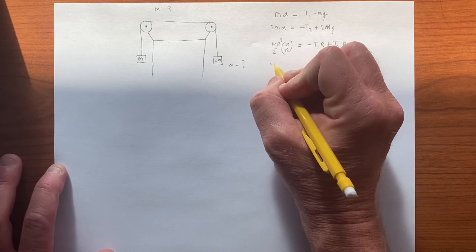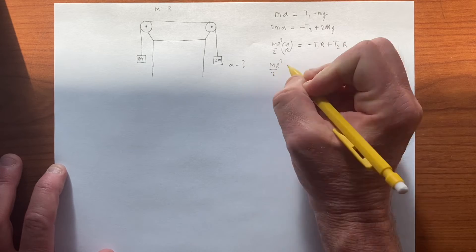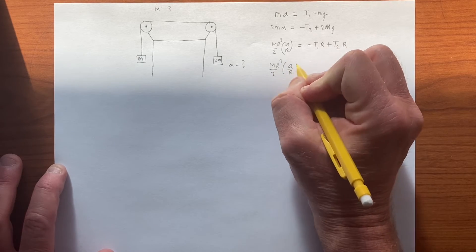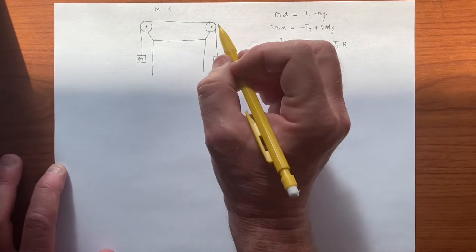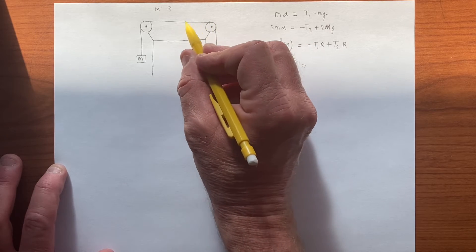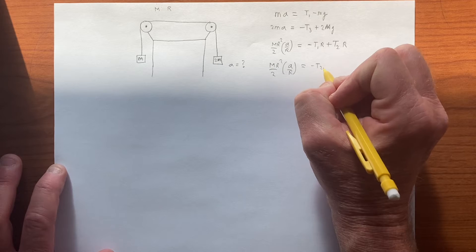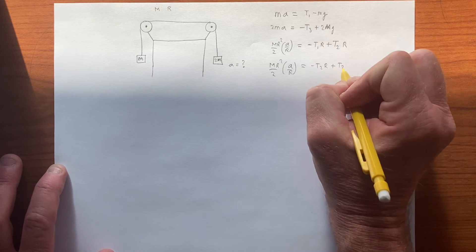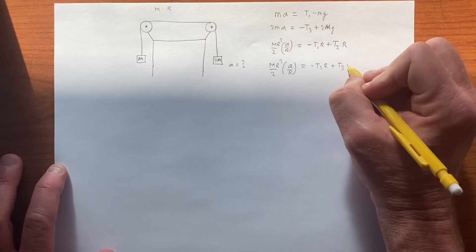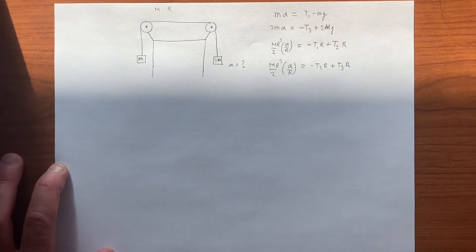And so that's the sum of torques on this object, and now we have this object, which is the same moment of inertia, m r squared over 2, a over r, and that's going to be equal to a torque, which is that way, which is negative due to t2, so we have a minus t2r, and we have a plus t3 times r, and that's the system of equations.